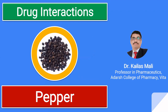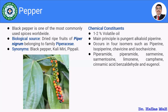Welcome to the session on herbal drug technology. In this session, we are going to discuss the drug pepper. Maybe you are aware about pepper — it is also called kali mirch, pippali, or black pepper. It is used in the spice sector. Mainly, here we are going to discuss black pepper, which is one of the most commonly used spices worldwide.